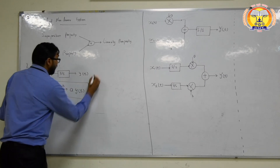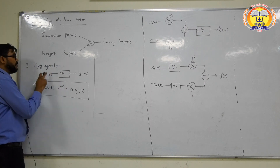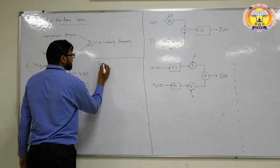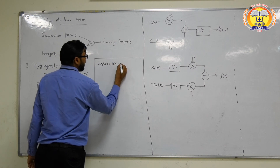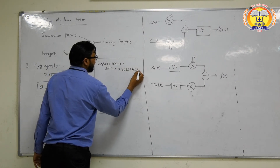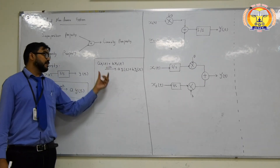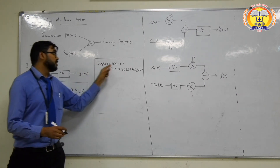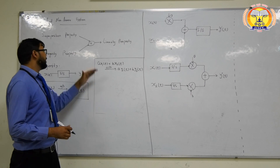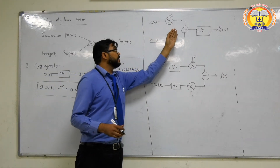If we combine these two properties, we get that for a system with input x(t) and output y(t), according to the linearity property, if we give the input a·x₁(t) + b·x₂(t) and get the output a·y₁(t) + b·y₂(t), then we can say that system is a linear system. A system which does not follow this property is a non-linear system. This linearity property — combining homogeneity and superposition — can also be represented by a diagram as drawn here.